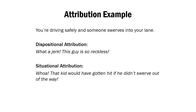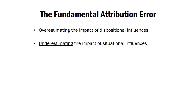Hopefully you can see the difference between these two kinds of attributions and how they distinctly change how you interpret someone's behavior. The question is, when are people going to draw one or the other? In general, what's known as the fundamental attribution error has documented that people tend to overestimate the impact of dispositional influences and underestimate the impact of situational influences — people are more likely to make a dispositional attribution than to look for things in the situation that could explain the same behavior.